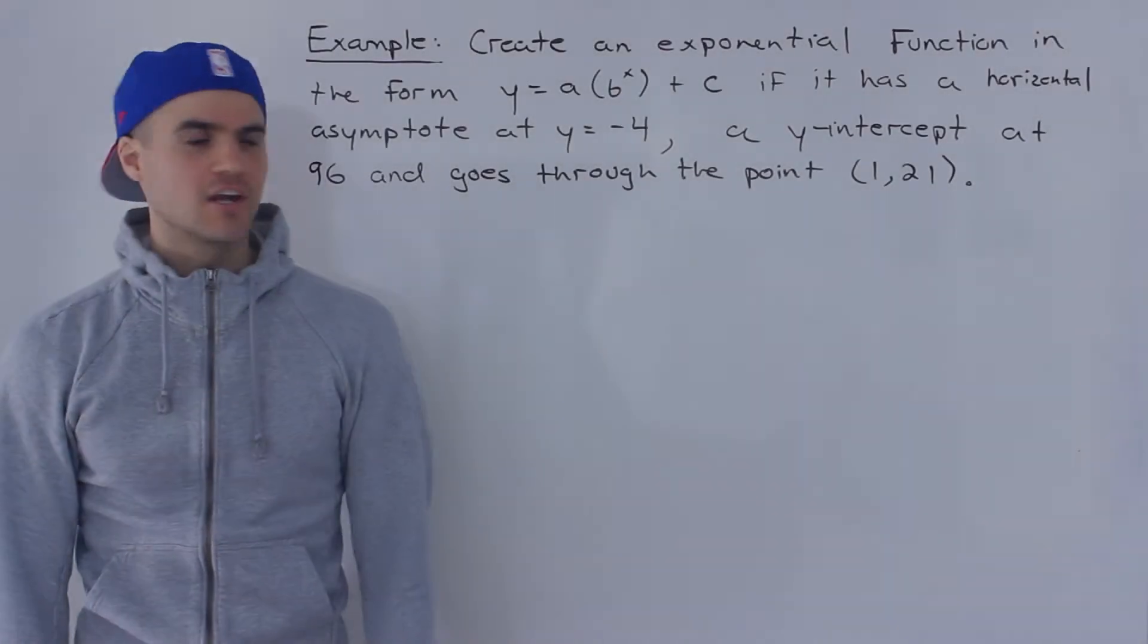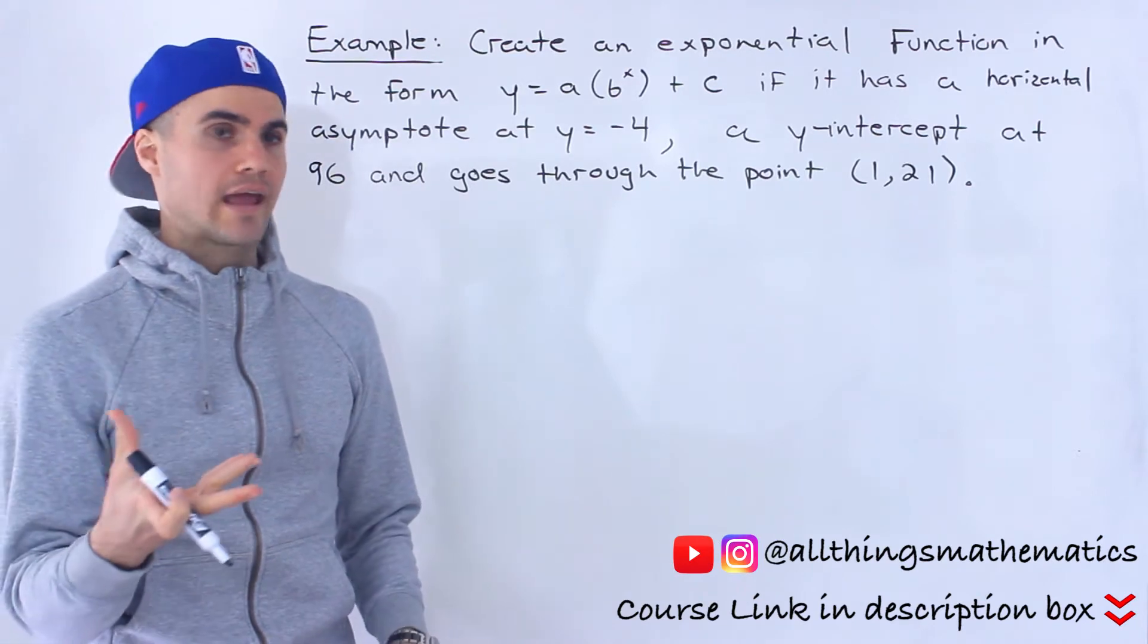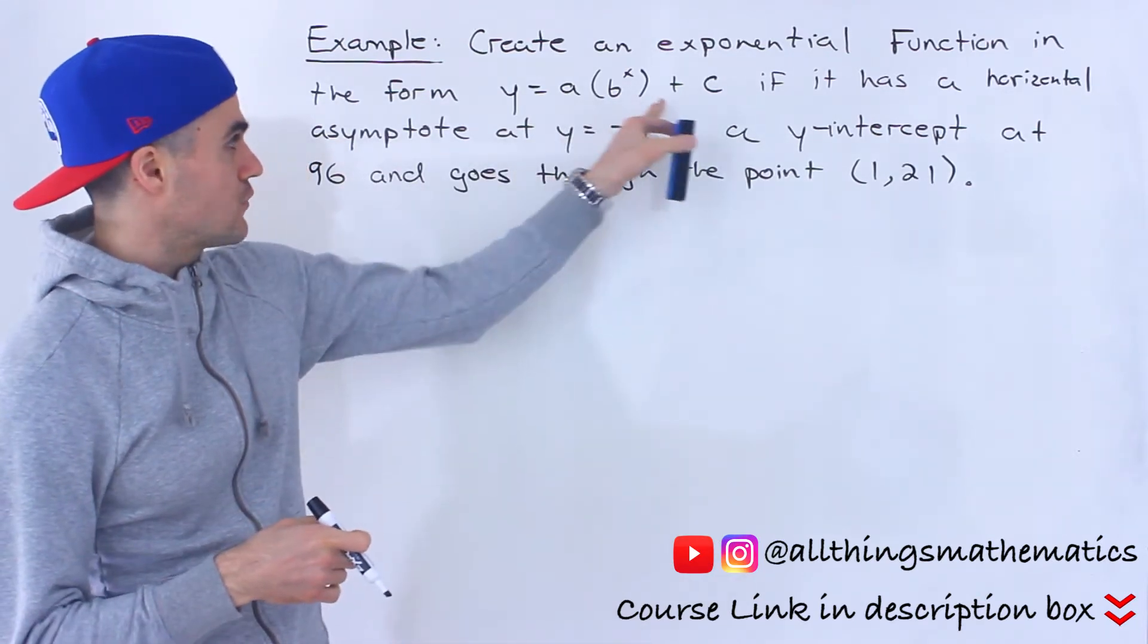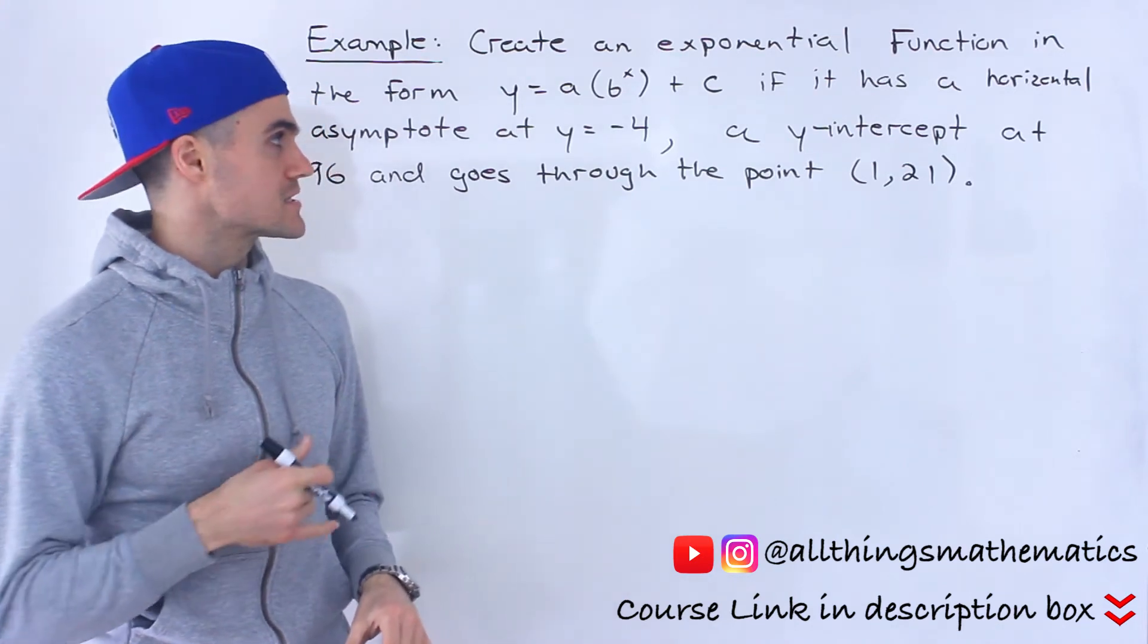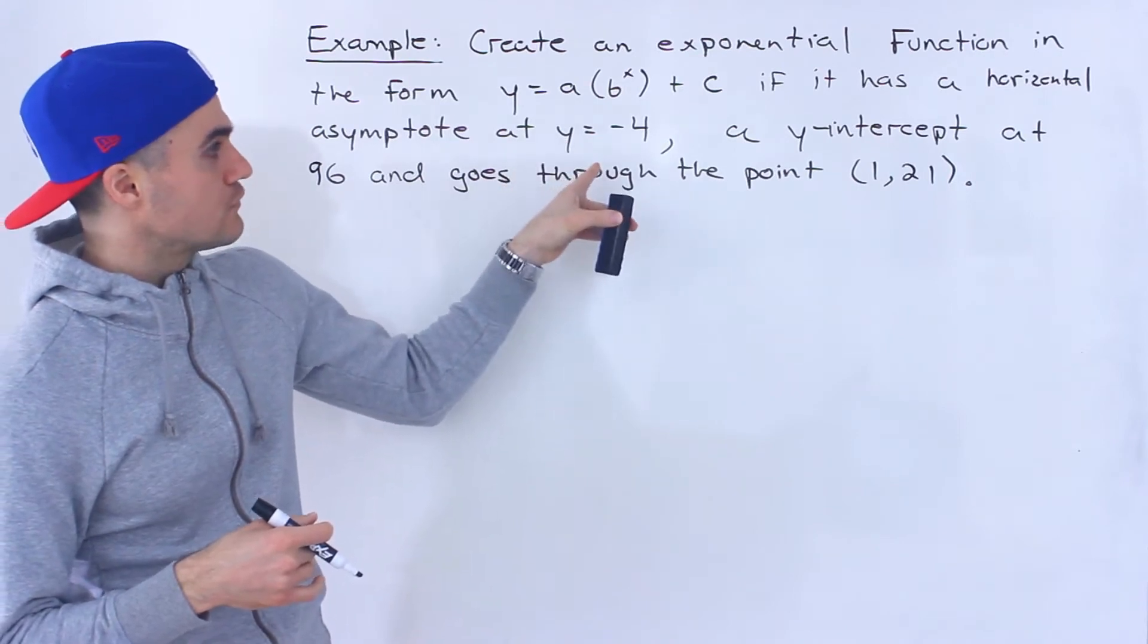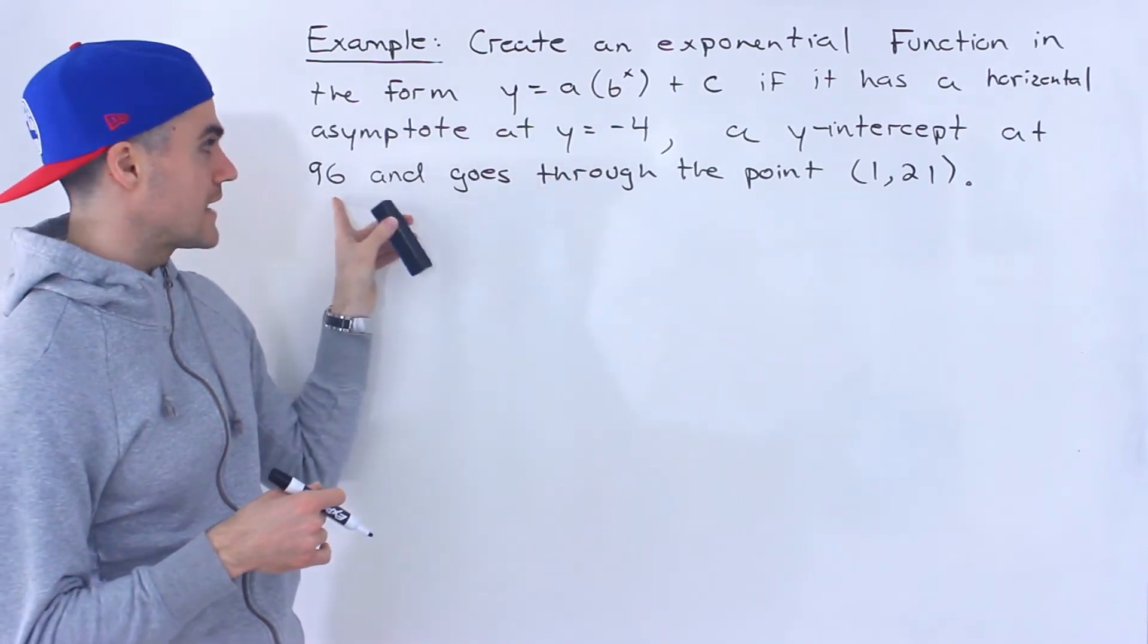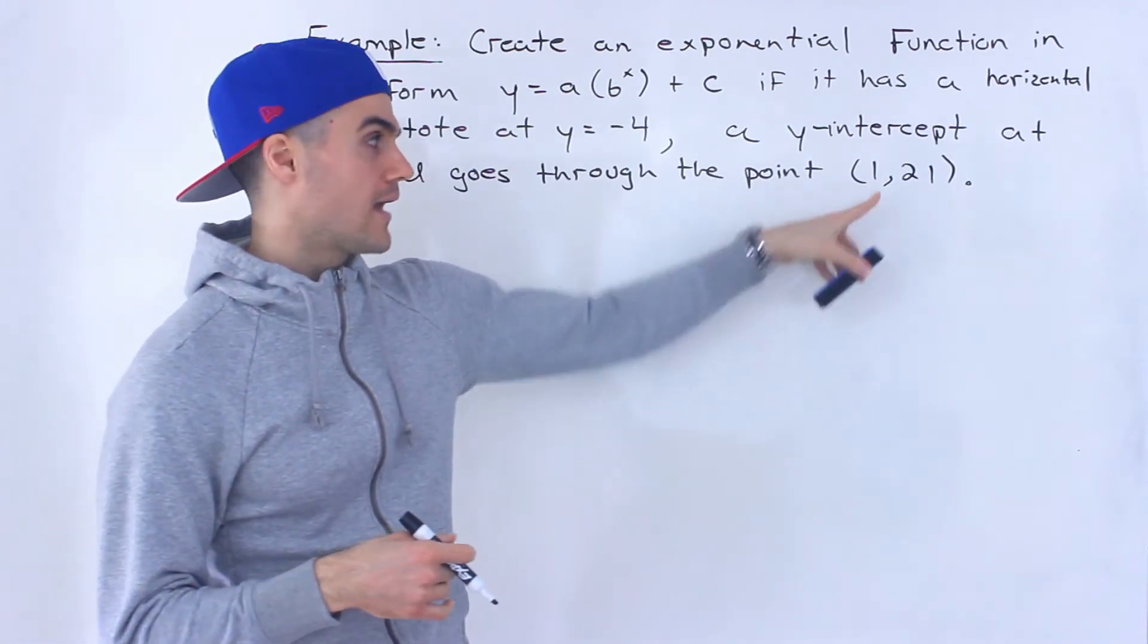What's up, everyone? Welcome back. Patrick here. And in this question, we have to create an exponential function in this format: y equals a times b to the power of x plus c. This exponential function is going to have a horizontal asymptote at y equals negative 4, a y-intercept at 96, and it's also going to go through the point (1, 21).